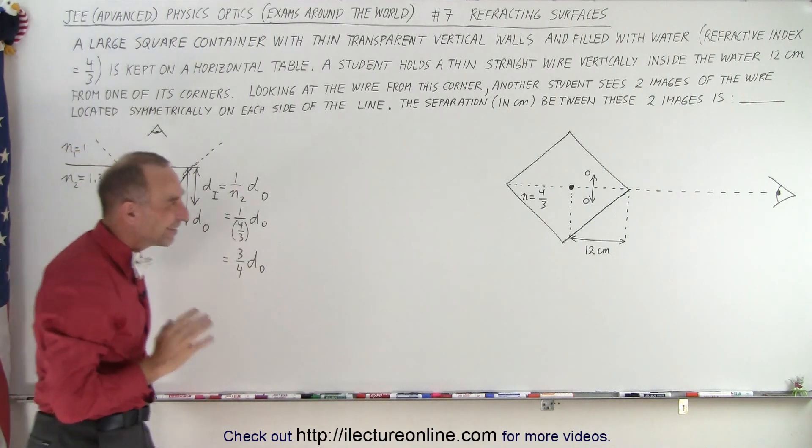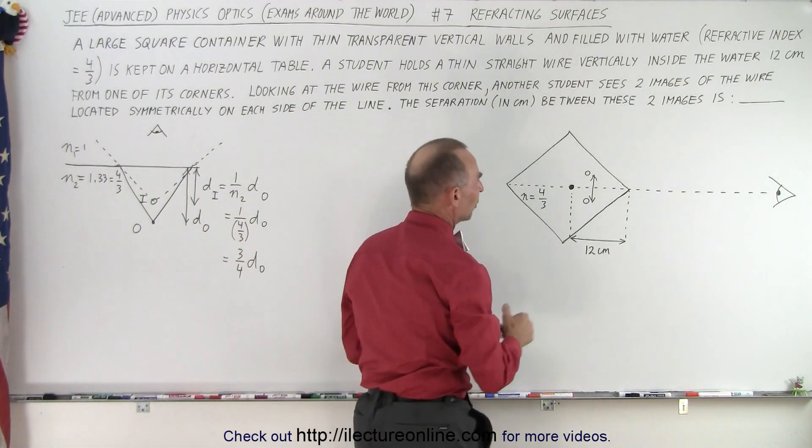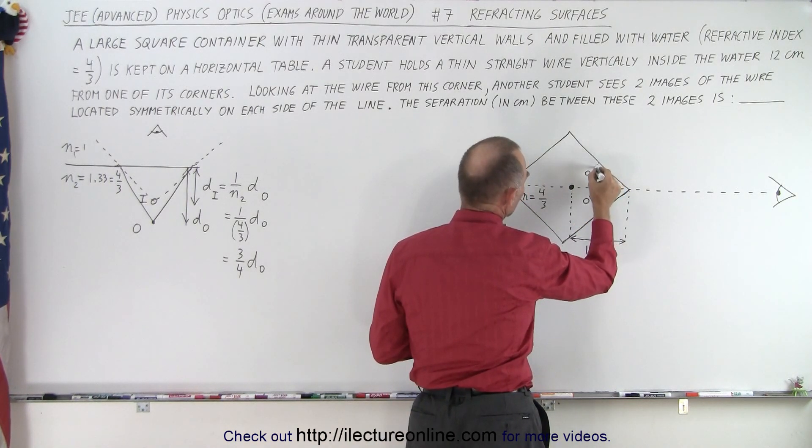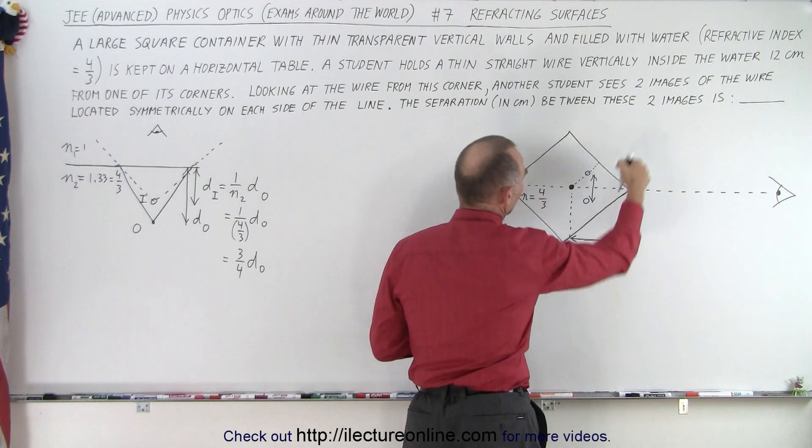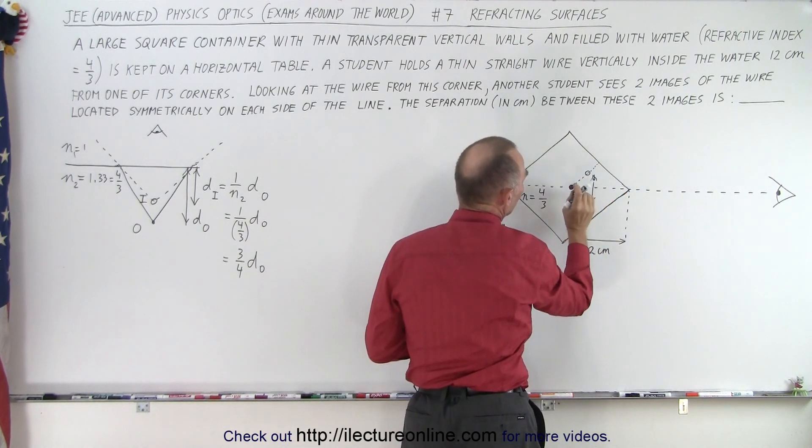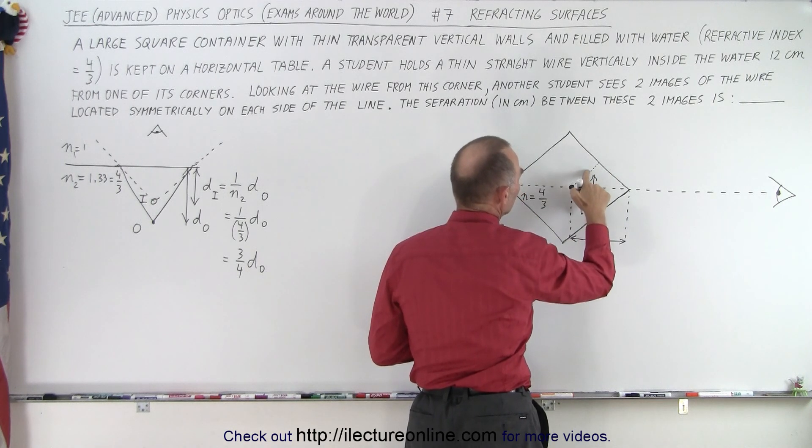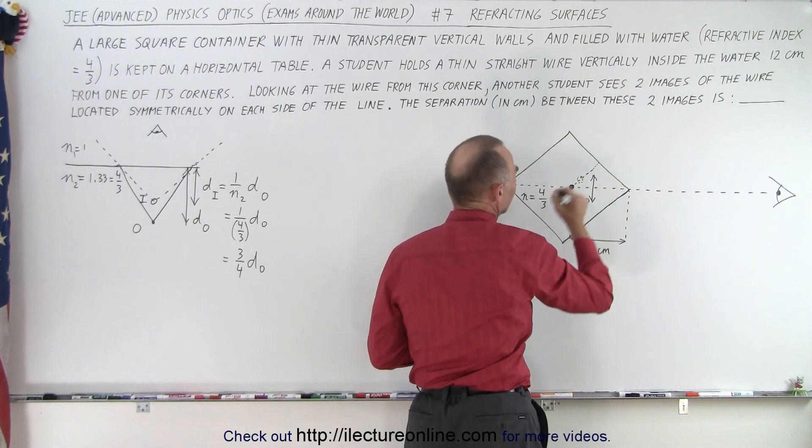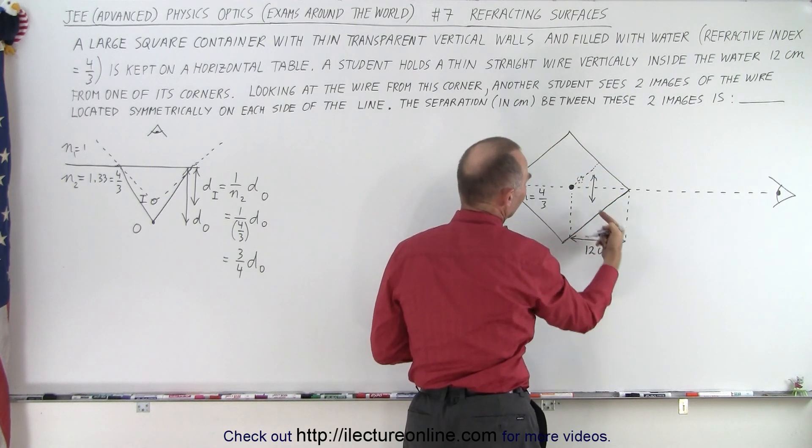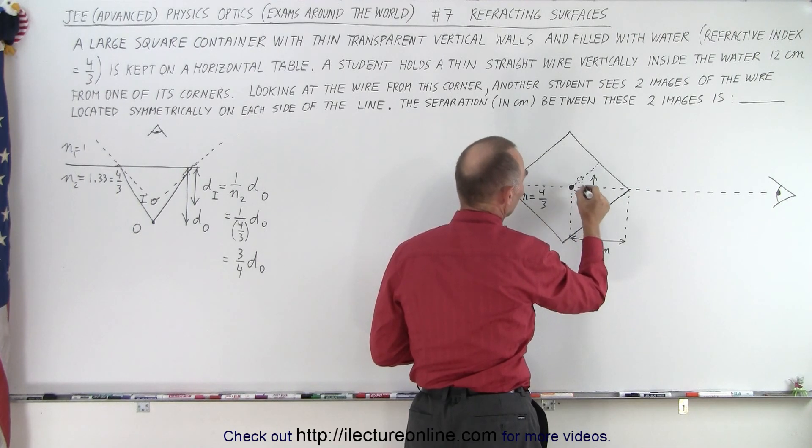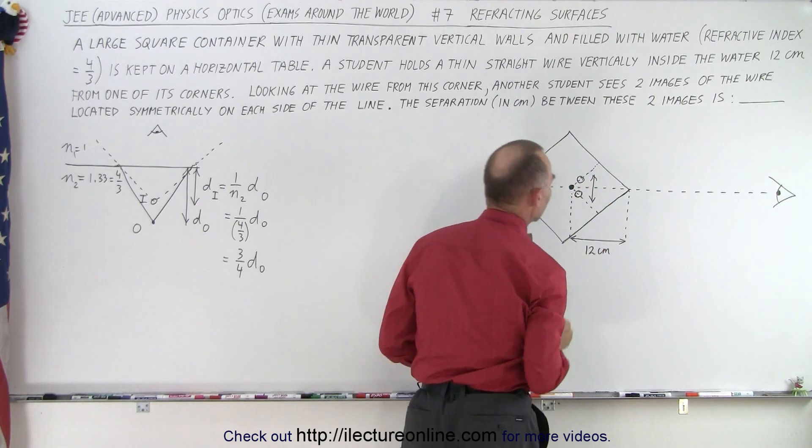Using that same principle, we can say that based upon this distance below the surface, looking straight down this way, we would see the object 3 quarters the way down. Let me redraw this, we would see the object 3 quarters of the way down here. And the same on the other side, looking from this direction, we'd see the object 3 quarters of the way down, so there would be an image there, and there would be an image there.